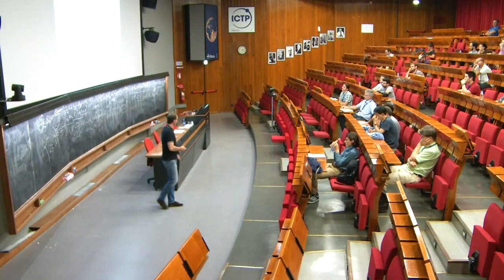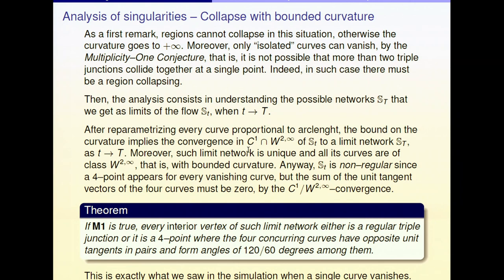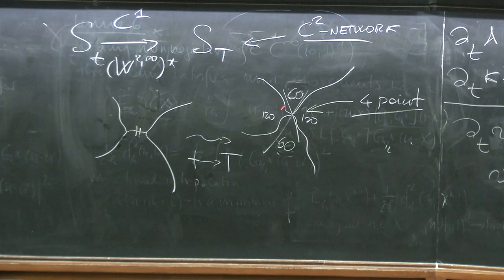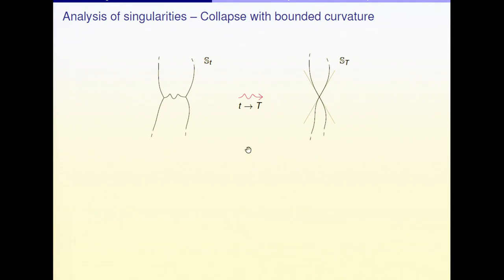This is a theorem. Under the multiplicity one conjecture, what we get in S(T) is a network where triple junctions that do not vanish remain regular triple junctions with 120 degrees, and for every isolated vanishing curve you get a four-point with the angle condition 120, 120, 60, 60 — exactly what we saw in the simulation. Thanks to Alessandro Pluda for the better drawing.